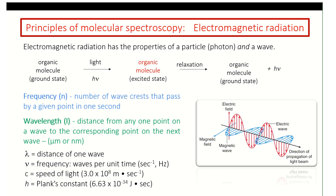There's not a lot we can do with that light except reflect it, absorb it, or emit it. It's all to do with some type of absorption, and the absorption of said molecule will tell us what the content of that molecule is.